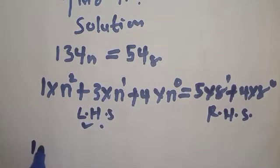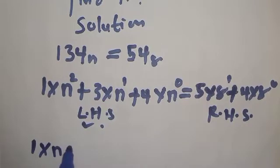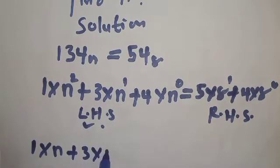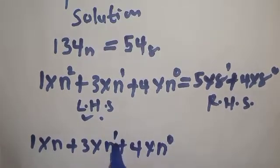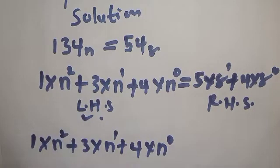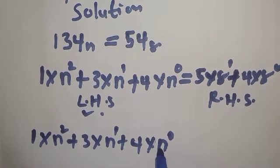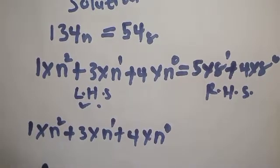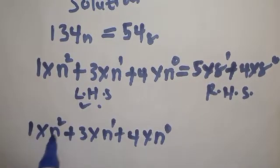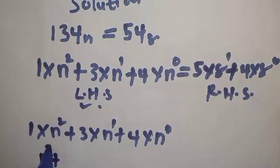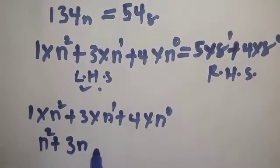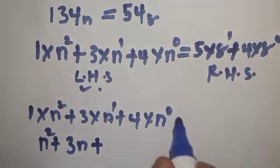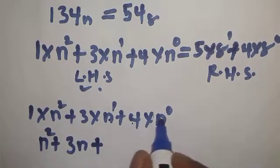We have 1 times n plus 3 times n plus 4 times n. Here n raised to power 0, n raised to power 1, n raised to power 2 — remember we are converting to base 10. Then this can be written as 1 times n squared, which is n squared, plus 3 times n raised to power 1, which is 3n, plus 4 times n raised to power 0, which is 1, so plus 4.